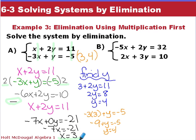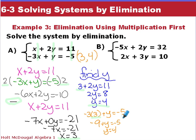Now substitute 3 in for x. In the first equation, we get 3 plus 2y equals 11. Subtract 3: 2y equals 8. Divide both sides by 2, y equals 4. Checking the second equation, substituting in 3 for x: negative 3 times 3 plus y equals negative 5, so negative 9 plus y equals negative 5, and y equals 4. Our solution is at the point (3, 4).